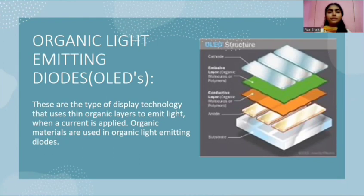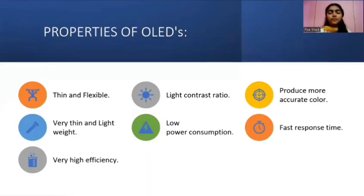Another display technology is organic light emitting diodes, also called OLEDs. These are the type of display technology that uses thin organic layers to emit light when a current is applied. Organic materials are used in OLEDs. Properties of OLEDs: they are thin and flexible, very lightweight, have very high efficiency, high contrast ratio, low power consumption, produce more accurate color, and have fast response time.